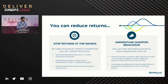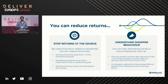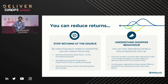It also makes sense that if a certain product is spiking on returns, something is probably wrong. If it's spiking on 'too small,' something is probably wrong with the sizing — it can be a manufacturing issue, it can be a quality issue. This gives you triggers to go back to manufacturing and say something is wrong with this product. And that makes sure that in the end, you're reducing your returns.